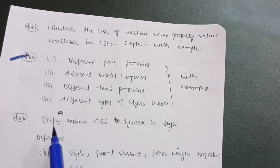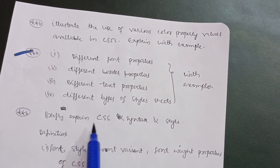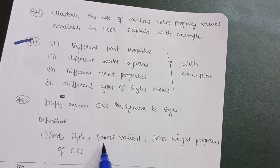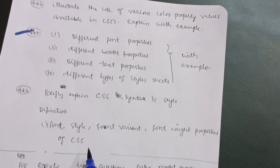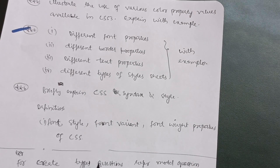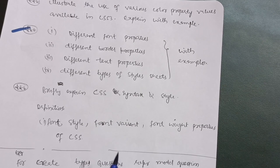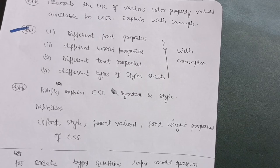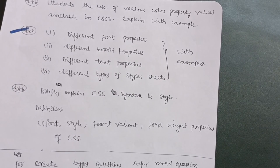Next, briefly explain CSS syntax and style, and some definitions like font-style, font-variant, and font-weight properties of CSS. As mentioned earlier, for create-type questions on HTML and XHTML, you should refer to the model question paper. Now let us discuss Modules 1 and 2, which you need to cover if you want to score in this subject.